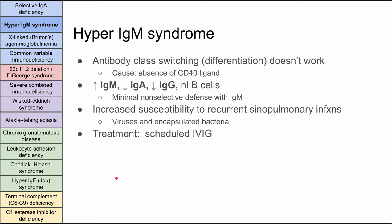Next is hyper-IgM syndrome. The pathophysiology is similar — antibody class switching does not work. The problem here specifically is the CD40 ligand, and the absence of that CD40 ligand means that antibody class switching does not work. To diagnose this you look at the immunoglobulins: IgM is high and the rest are low. With minimal non-selective defense from IgM, they have increased susceptibility to recurrent sinopulmonary infections, viruses, and encapsulated bacteria. The treatment is scheduled IV Ig.